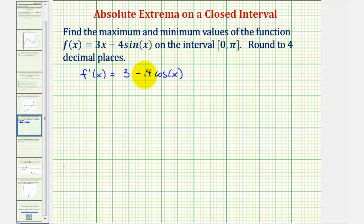Well, this function is never going to be undefined. Therefore, to find the critical numbers, we'll set this equal to zero and solve for x. So we'll subtract three on both sides of the equation. And now if we divide both sides of the equation by negative four, we'd have cos(x) = 3/4.